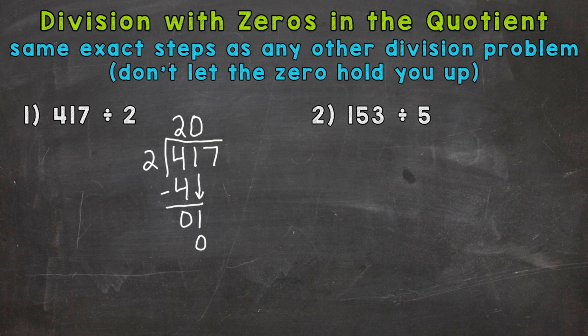So 0 times 2 is 0. Subtract, we get 1. Bring down the 7. So now we have 17 divided by 2. How many whole 2's out of 17? Well, 8. 8 times 2 is 16. Subtract, and we get remainder 1. So our answer is 208 remainder 1.